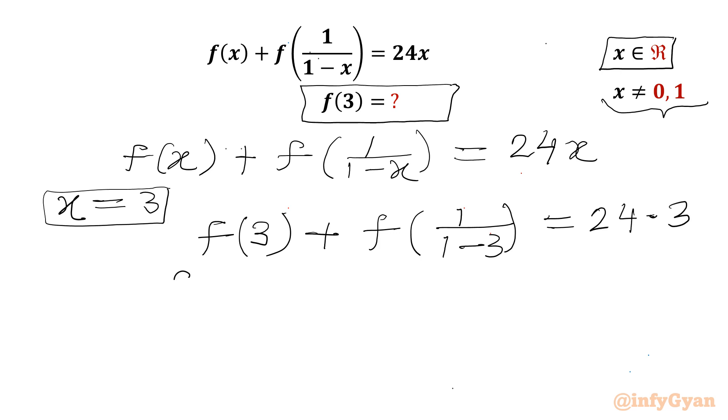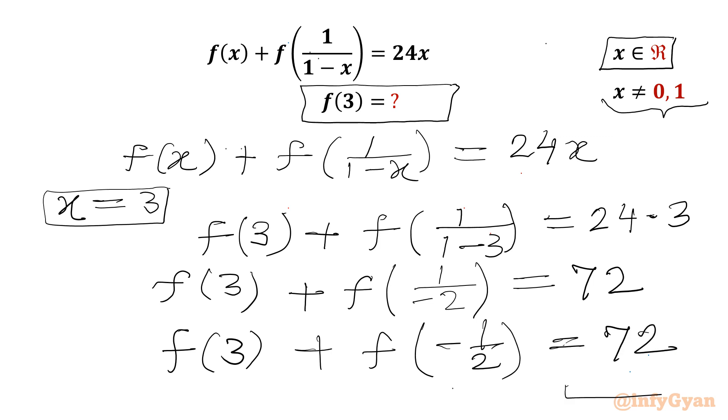Or f(3) + f(1/(-2)) = 72. Or I can write f(3) + f(-1/2) = 72. I will call this as equation number 1.